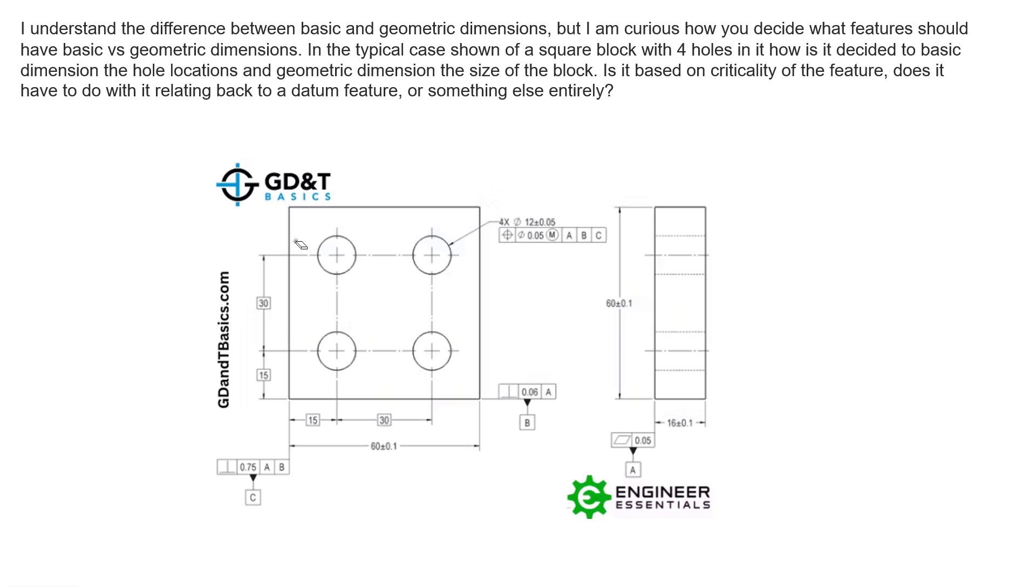One thing we didn't show on this drawing is traditional coordinate dimensions. Now, some drawings will utilize traditional coordinate dimensions like this here and have 15 plus or minus some value here to locate a feature of size. This is kind of the traditional coordinate dimensioning way of doing it. But it directly competes with controlling the position using the position symbol. So we wouldn't come in and use coordinate dimensions on this drawing because we've already located these features with a geometric dimension and tolerance. So we have basic dimensions and the geometric tolerance defined in the feature control frame.